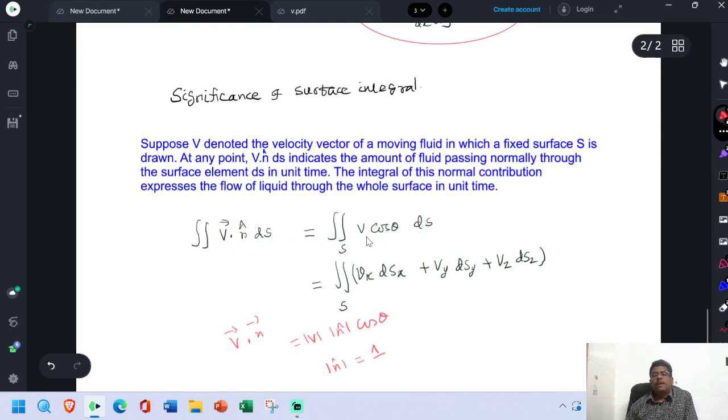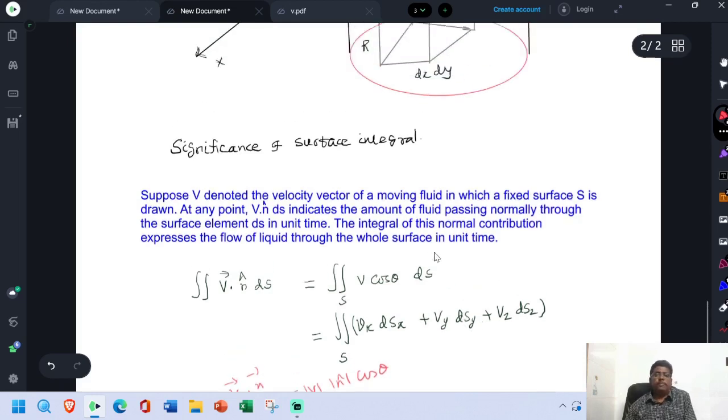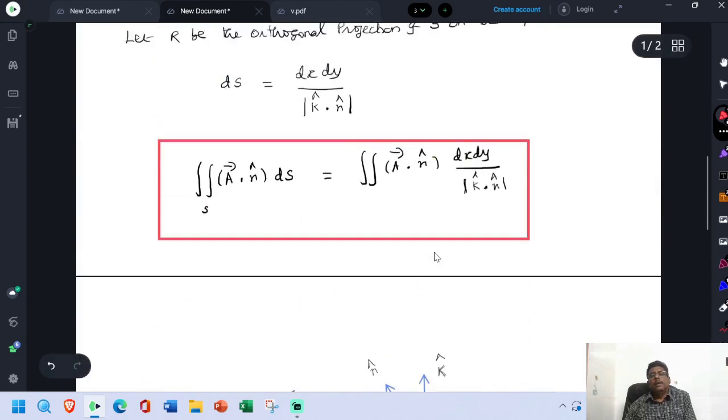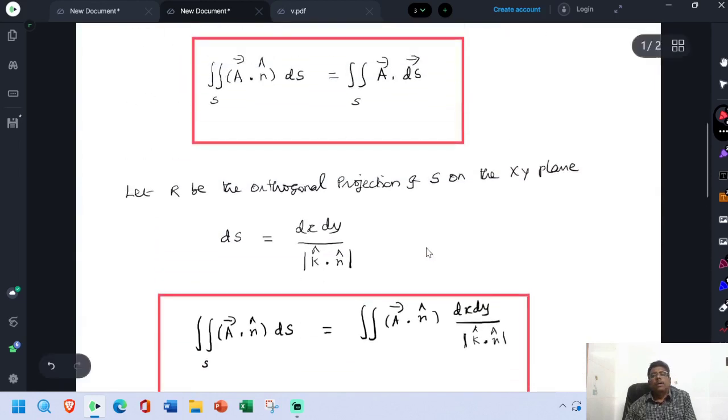Then this is modified as Vx Dsx plus Vy Dsy plus Vz Dsz. Now this is our surface integral.